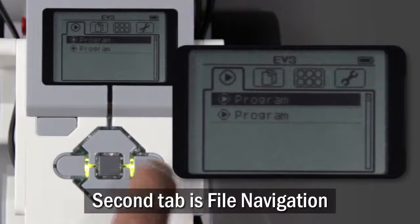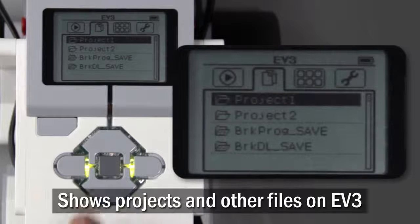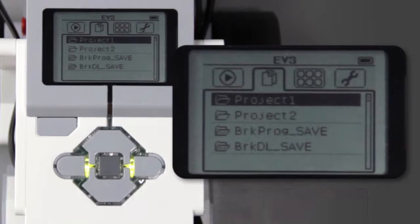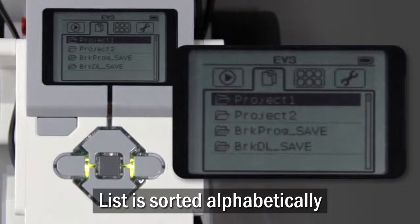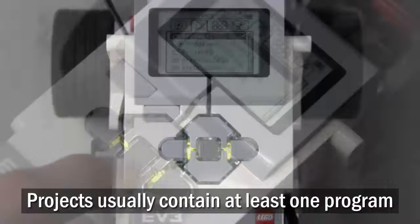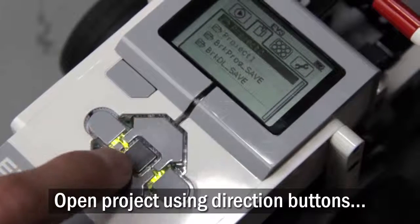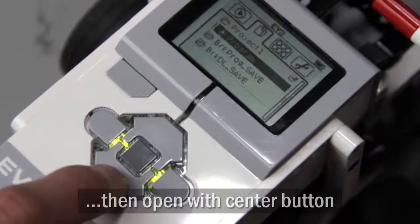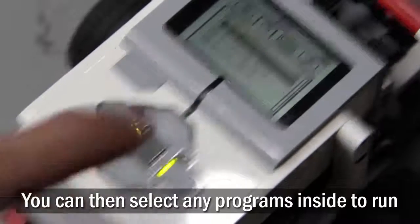The second tab along the top is File Navigation. It shows a list of projects and other files that may be loaded onto your EV3. This list is sorted alphabetically. Projects usually contain at least one program. You can open a project by navigating to it with the direction buttons, then pressing center to open it. You can then run any of the programs that may be contained inside.